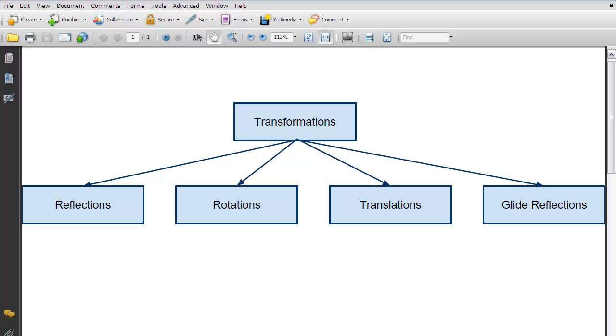Remember we said all of those were isometries or what we called congruence transformations. And the reason why we called them congruence transformations is no matter what, if we did any one of these four, we would always end up with a figure that was congruent to the figure that we started with. So we could basically move that figure anywhere on our page and it would be one of these four transformations.